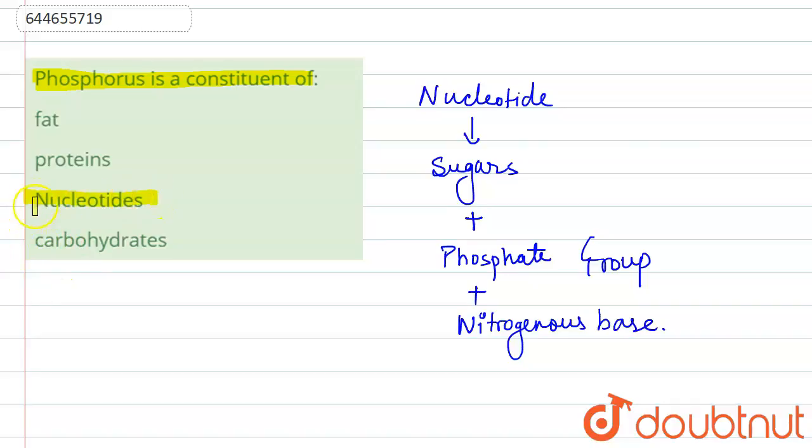Fat is not an option because fat cannot constitute the phosphorus. Protein also, only some proteins have phosphorus, but in general all proteins cannot have a phosphorus, so this is also wrong. The carbohydrate is not made up of the phosphorus, so it is also wrong. The correct answer is nucleotide.